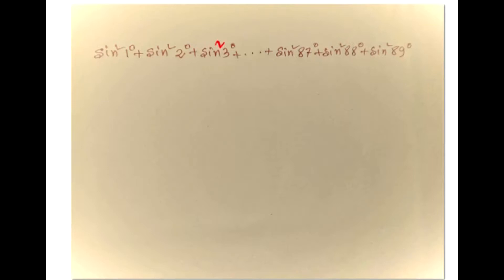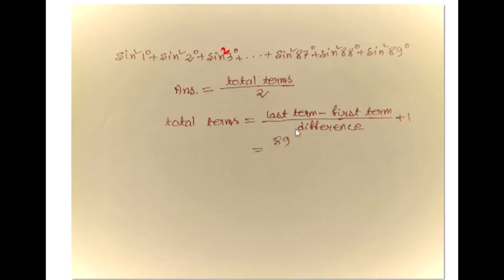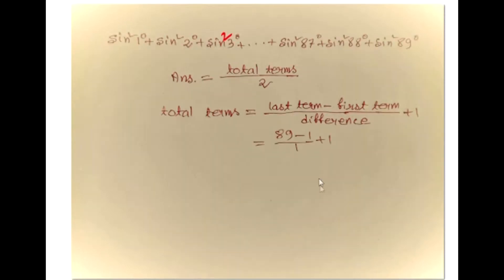So this rule will be applicable here. Now the answer will be total terms divided by 2. This is our answer and we will get total terms by this formula: last term minus first term divided by difference, plus 1. So this is the formula to get the total terms.